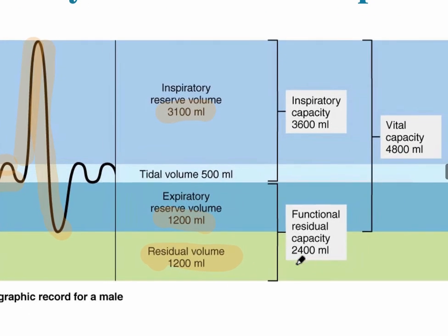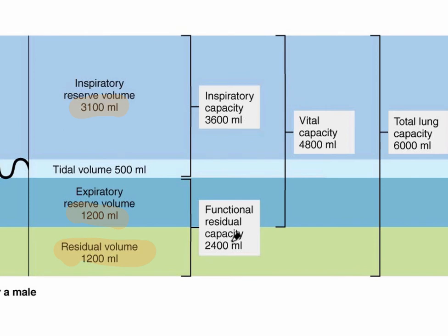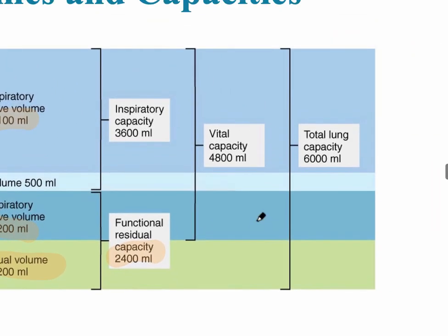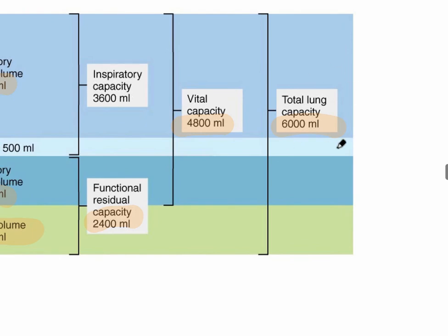The right side of this graph shows the various capacities that can be calculated by adding these various volumes. The inspiratory capacity is the tidal volume plus the inspiratory reserve volume. The functional residual capacity is what remains in the lungs normally — the expiratory reserve volume plus the residual volume of 1,200 milliliters, combining to 2,400 milliliters. The combination of the expiratory reserve volume, tidal volume, and inspiratory reserve volume is called the vital capacity. The total air in the lungs is the total lung capacity.